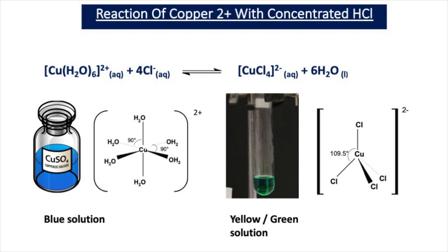Notice that the oxidation state of copper does not change in this reaction — in Cu(H₂O)₆²⁺ it is +2 and in CuCl₄²⁻ it is also +2. This is a reversible reaction so Le Chatelier's principle applies. When you add concentrated HCl you're adding Cl⁻ ions, so the equilibrium shifts to the right-hand side to remove the Cl⁻ ions, giving a yellow-green solution. When you add water, the equilibrium shifts to the left-hand side to remove water, returning the blue colour.